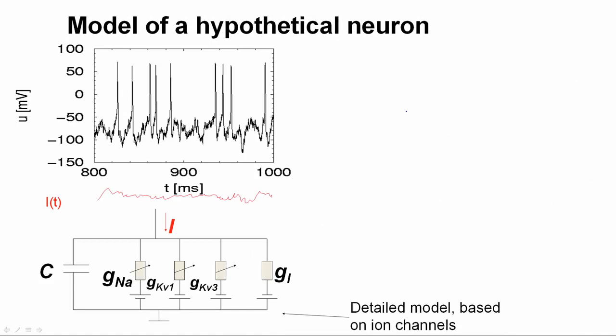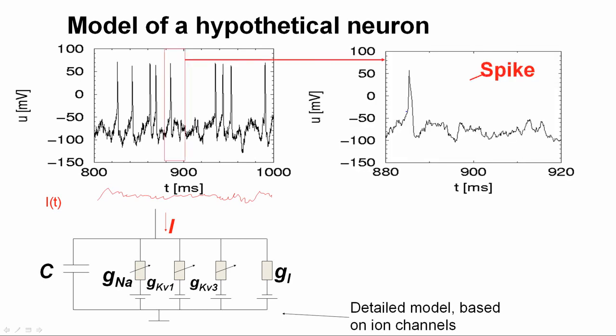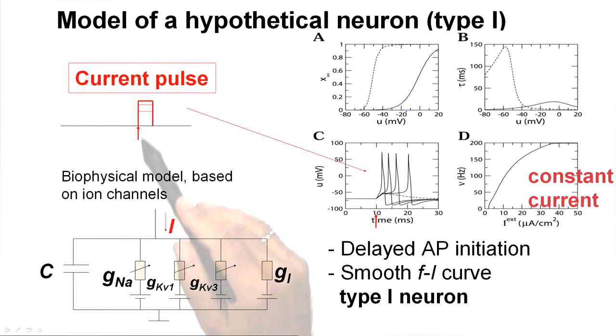Now, if we take our hypothetical model, we inject the time-dependent current, as we would probably observe in cortex. Again, we see spikes. We see a subthreshold fluctuation. If we inject a current pulse, we again see some kind of threshold behavior. There's either a pulse or there is no pulse.